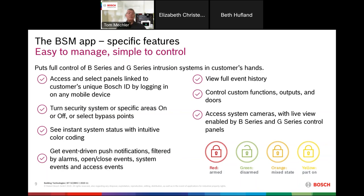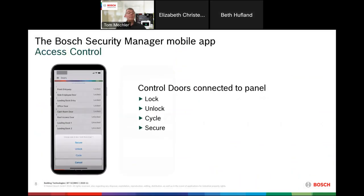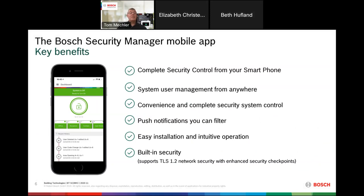Event-driven push notifications — the app allows you to select which push notifications you'd like to receive. If there's an event that end user needs to know about, it comes right to their phone as long as they're using the app. You can view full event history. Looking at the dashboard, you can see the status of the entire system, the status of individual areas, and the last couple of history events — so you know who armed the system last, who disarmed it, or if somebody changed a user code.